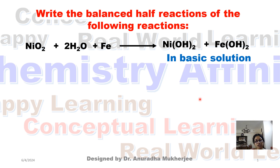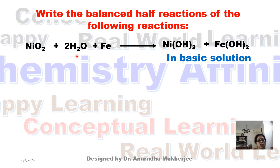Hello students. Today's video I am going to discuss how we can find out the half-reactions from a chemical reaction. Here the reaction has been given: nickel oxide plus 2H₂O plus Fe is giving nickel hydroxide and ferrous hydroxide. So here we have to find out the half-reactions.